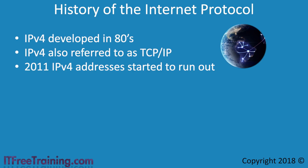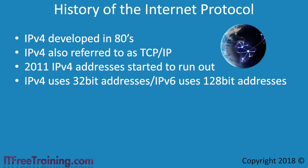The protocol to replace IPv4 was IPv6. There was a version 5 of the Internet Protocol, however this protocol was experimental only and never got deployed. The main difference between IPv4 and IPv6 is that IPv4 uses 32-bit addresses while IPv6 uses 128-bit addresses. In later videos, I will have a closer look at how this makes a difference to the number of devices the Internet can support, but there are so many addresses in IPv6 that we should never run out.